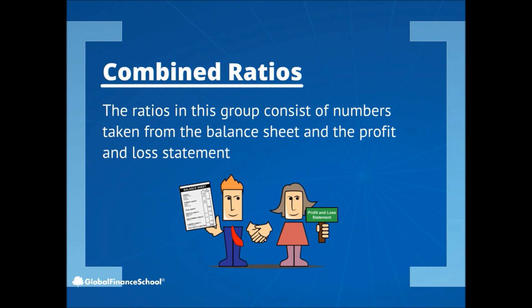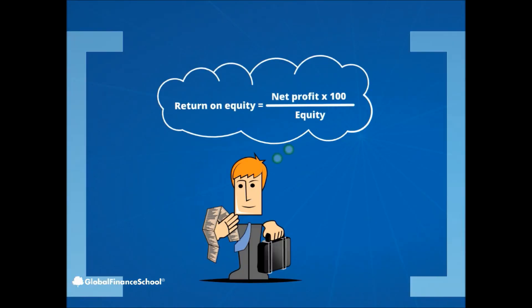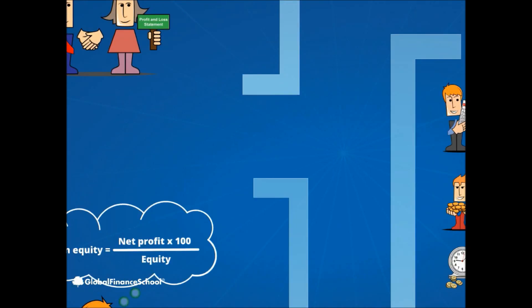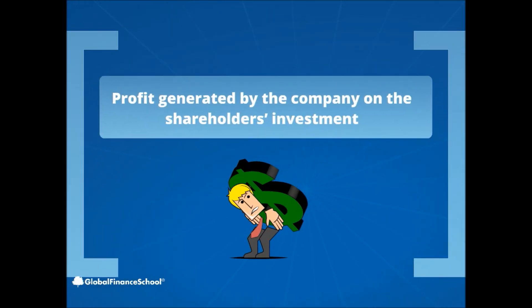The ratios in this group consist of numbers taken from both the balance sheet and the profit and loss statement. One of the popular ratios in this group is the return on equity ratio. The return on equity ratio's purpose is to calculate the profit, in percentages, generated by the company on the shareholder's investment.